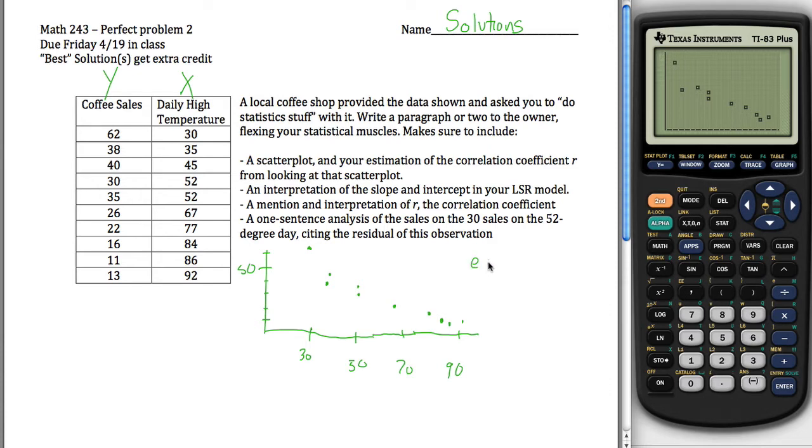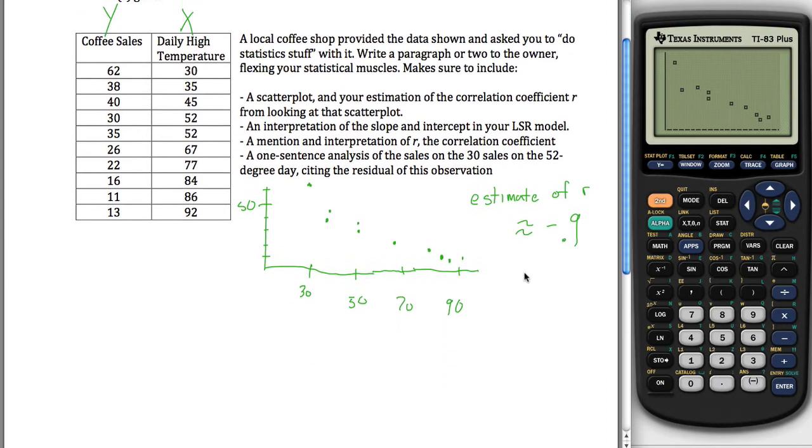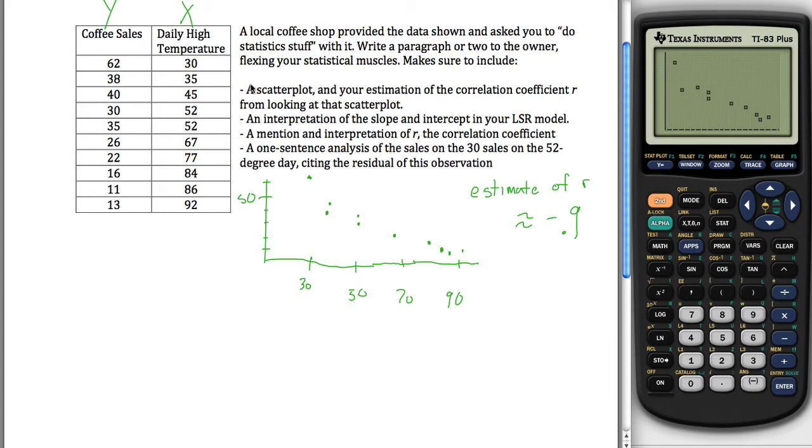And then my guess, my estimate for R. I mean, you can't really be wrong with your estimate, although I guess you kind of can. We want this to be negative, because there's clearly a negative relationship here, so we want a negative number, and we want it to be pretty close to negative 1, because it looks pretty linear here. They fall on a pretty good line. Estimate of R, I don't know, negative 0.9 maybe, something like that. We'll calculate it later and see how close we are. So I think that's everything from this first bullet point.